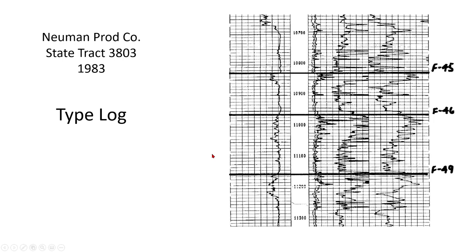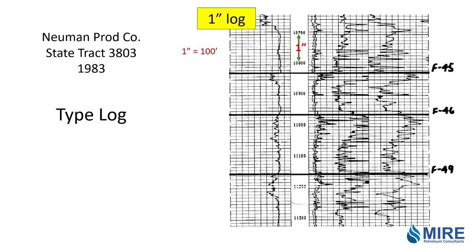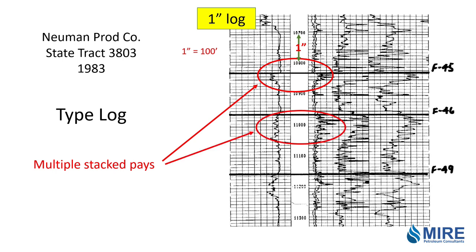Here's the type log from the well to the south. It is a 1-inch log — a correlation log. The reason we call it a 1-inch log is because on the paper copy of the log, it takes 1 inch to equal 100 feet of depth. We call this type of field having multiple stacked pays because you have reservoirs all stacked up and down in the hole. The one we're going to be working on is the F46.